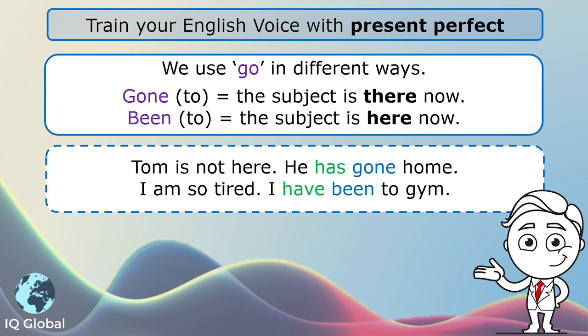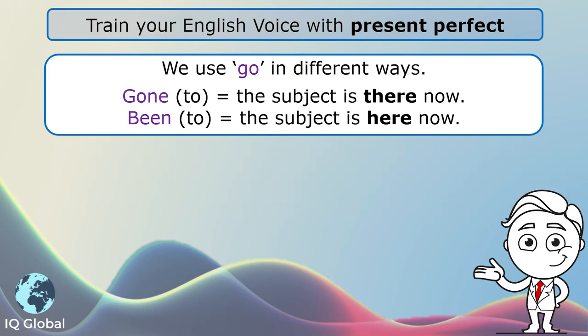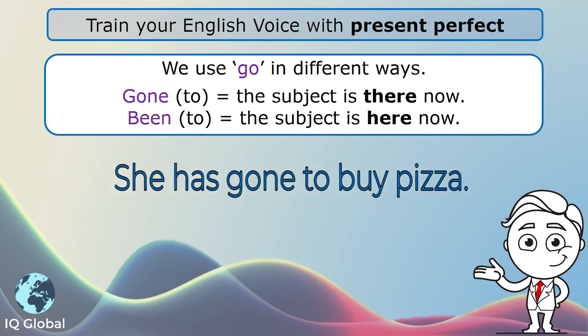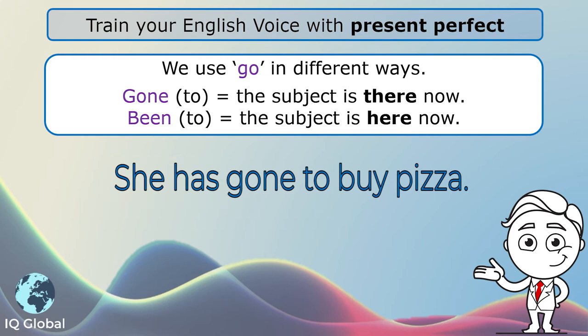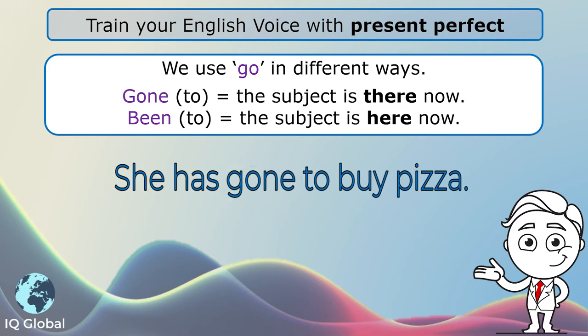I've already been to the gym. I am now here — I am not still there at the gym, I'm here. Another example: she has gone to buy pizza. The subject is she, so we use has, and the past participle is gone because she is there now, probably at the pizza place. She's not here, she's there — she's buying a pizza.